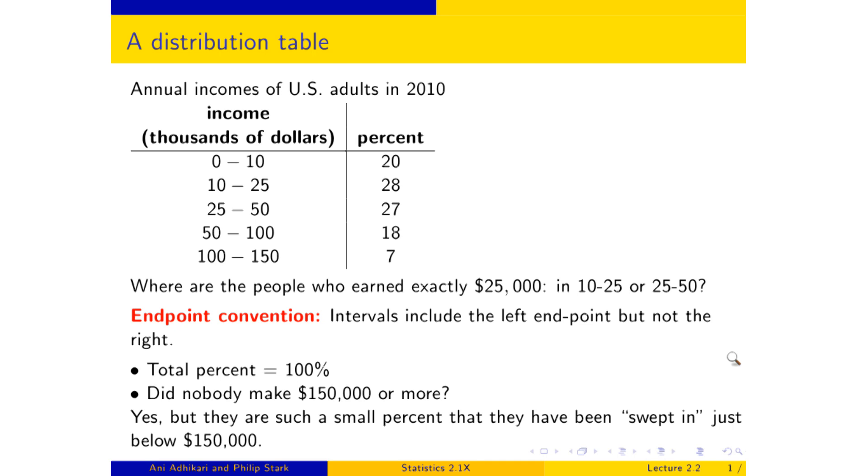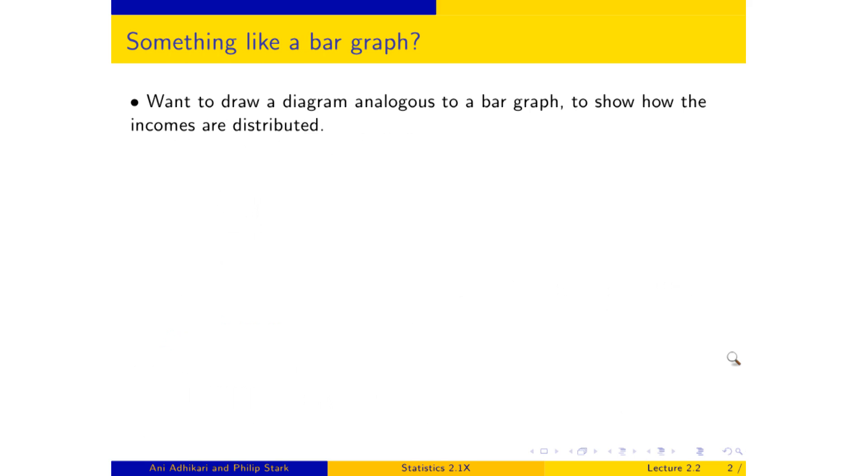Now, looking at that table, you have some sense of what the distribution looks like, but we'd really like to see it. We'd like to see it in a picture. And so what I'd love to be able to do is to draw a diagram that's like a bar graph to show how these incomes are distributed. And what does that mean? Well, we need a horizontal axis, and so we're going to show incomes on the horizontal axis, and we want vertical rectangular bars. So now I know what my horizontal axis is going to look like, and now I need to know how to draw the vertical bars for which I need the heights of the bars.